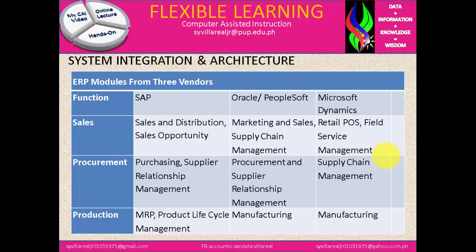In ERP modules from three vendors — SAP, Oracle or PeopleSoft, and Microsoft Dynamics — under sales: SAP has sales and distribution and sales opportunity; Oracle has marketing and sales and supply chain management; Microsoft Dynamics has retail and field service management. You will notice they have different identifications in terms of sales. In procurement: SAP has purchasing and supplier relationship management; Oracle has procurement and supplier relationship management; Microsoft Dynamics has supply chain management — they are all very different from each other.